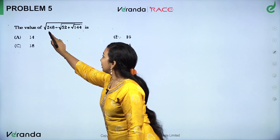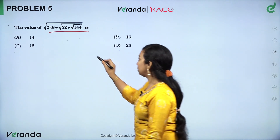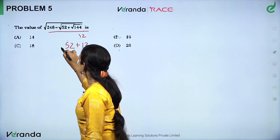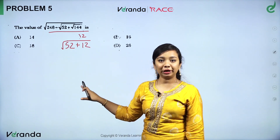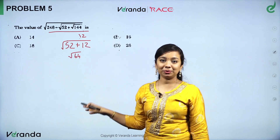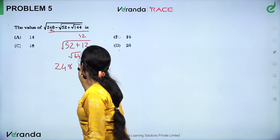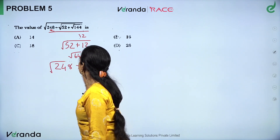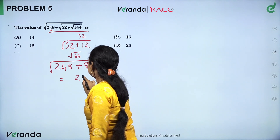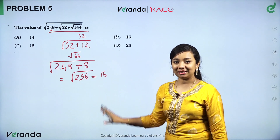Next sum: 144, as usual, we start from the right. Square root of 144 is 12. Then 52 plus 12 equals 64. Square root of 64 is 8. Already we have 248. So 248 plus 8 equals 256. Square root of 256 is 16. That is the answer.